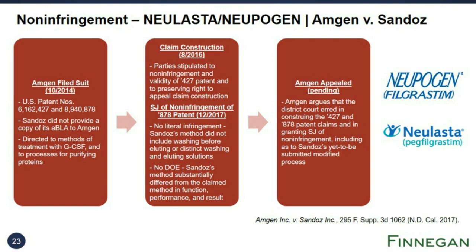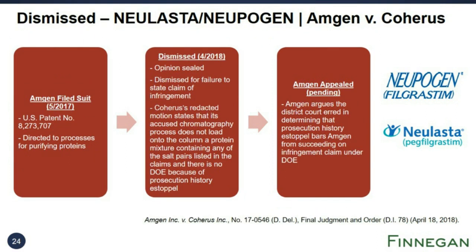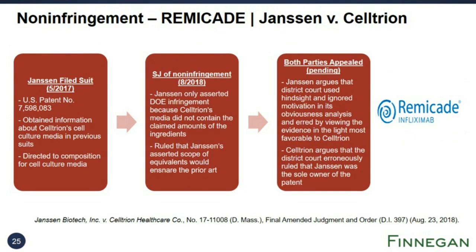In the next case, Amgen filed an infringement suit against Coheris in the District of Delaware, where the court granted Coheris's motion to dismiss for failure to state a claim of infringement—Amgen has appealed and the appeal is pending. The last non-infringement decision was issued in 2018 and is also on appeal. In that case, Janssen filed suit based on patents identified in a previous suit, and the court granted summary judgment of non-infringement, finding that Janssen would need to rely on the doctrine of equivalence, but that its asserted scope of equivalence would ensnare the prior art. Janssen has appealed.